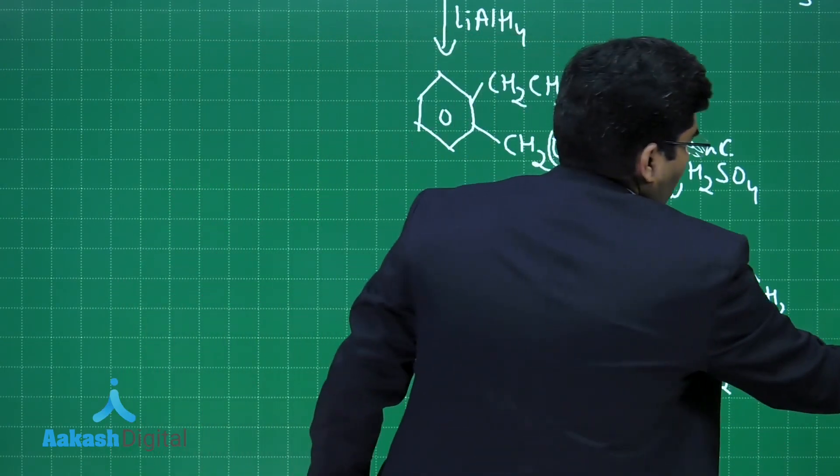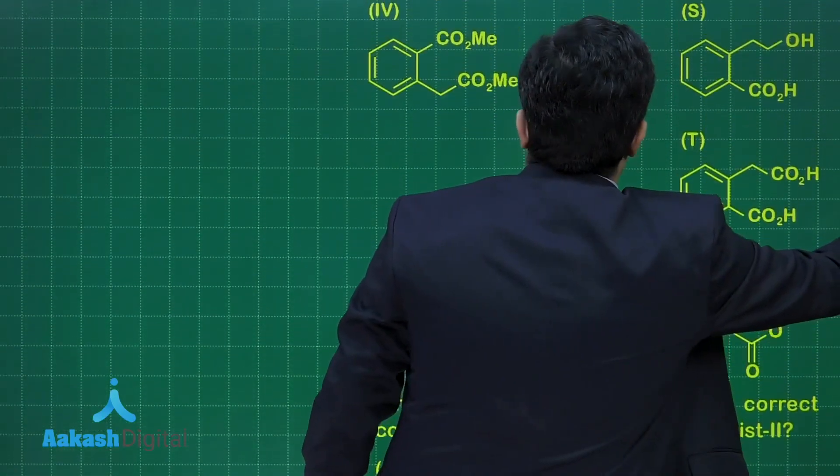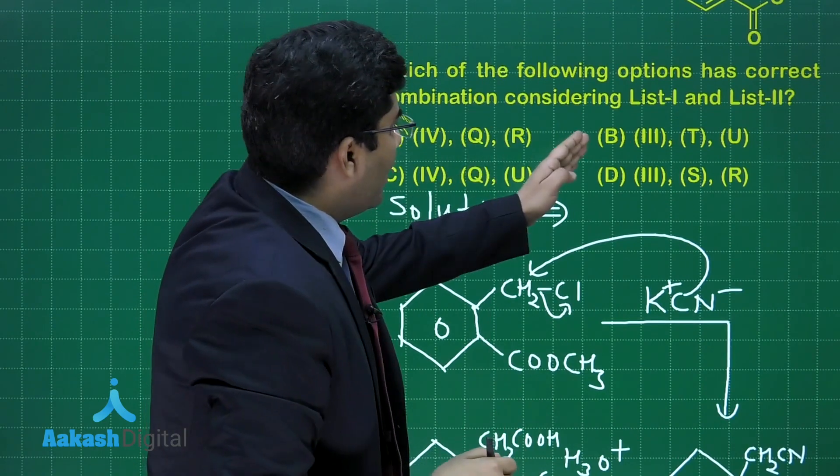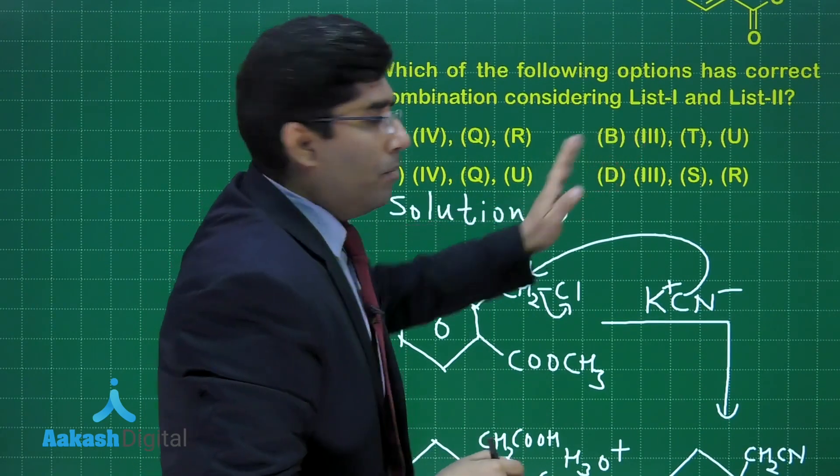It means we will get a six-membered ring attached to the benzene ring. Let us see where it is given. In the options, he is saying that in the third reaction, T and U will form.